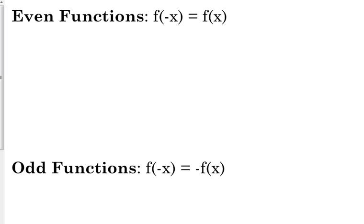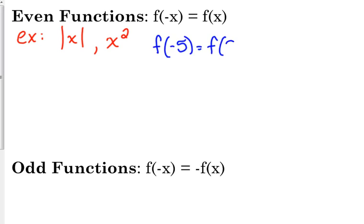So down here I've got even functions and odd functions. Examples of even functions — and these aren't the only ones — are the absolute value of x and x squared. You need to write down this notation: f of negative x equals f of x. If x is five, for the absolute value of x, is f of negative five the same value as f of positive five? Yes, they're both five. And for x squared, f of negative five is 25, and f of positive five is 25. So that's what it means to be an even function: when you plug in the negative x value, you get the exact same result as when you plug in the positive x value.